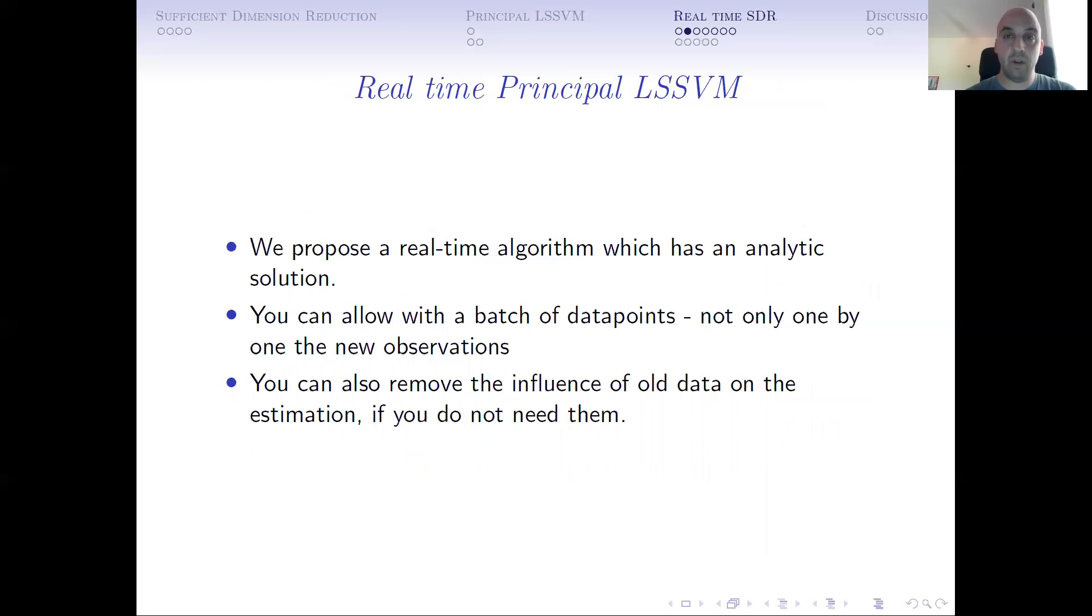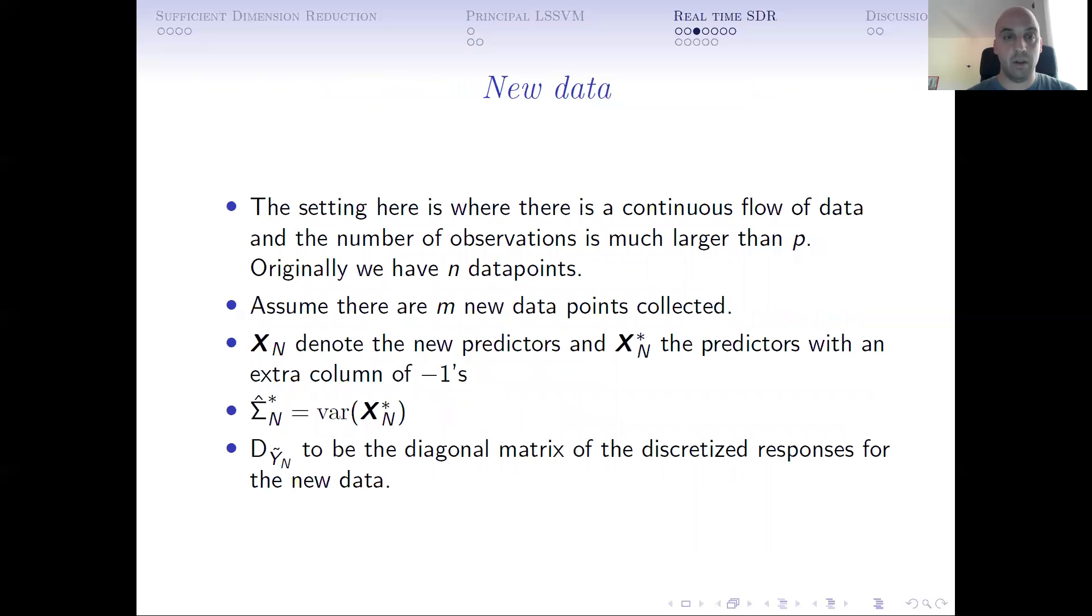Our approach is slightly different. First of all, we use a support vector machine framework, but also we have an analytic solution. We are allowed to do a batch update. So if 1,000 new data come in instead of doing it one by one, we can do all 1,000 points at the same time. And also if we find out that some of the previous observations were erroneously recorded or used the wrong instrument or something, then you can remove it from the estimation. So you can essentially remove the influence of those wrong points.